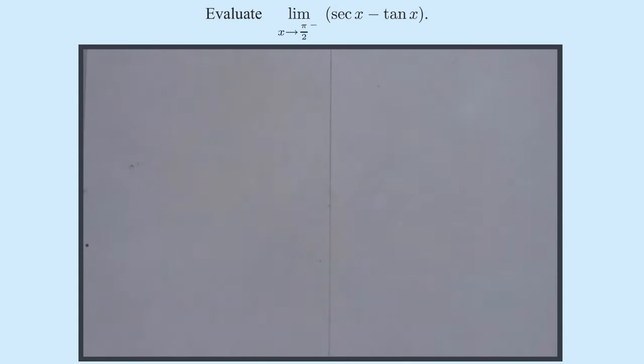Evaluate the limit as x approaches pi by 2. I would say from the left-hand side, but if you're thinking about a unit circle, which we will be soon, x is approaching pi by 2 from something less than pi by 2, and that's the limit of sec x minus tan x.